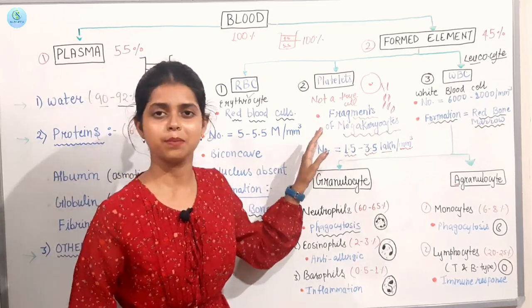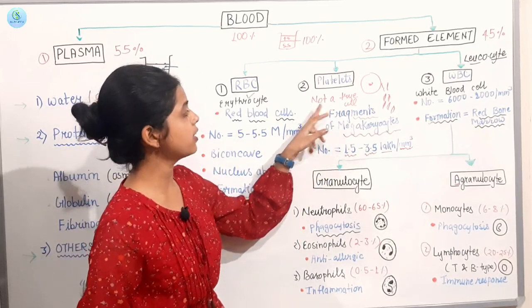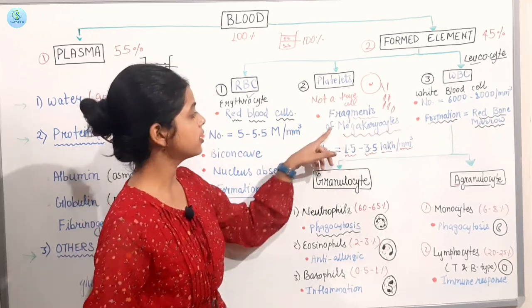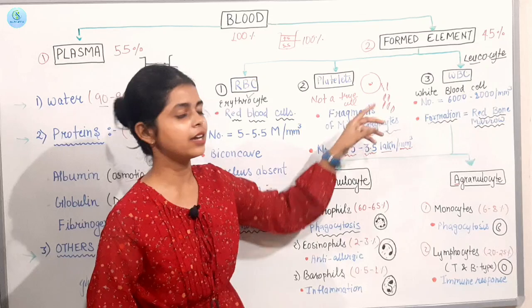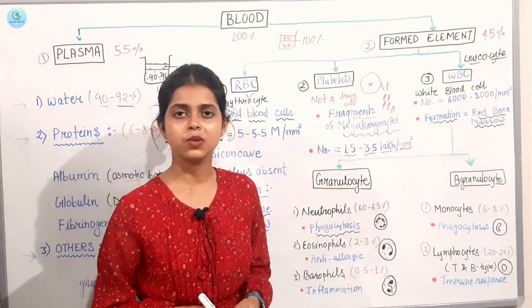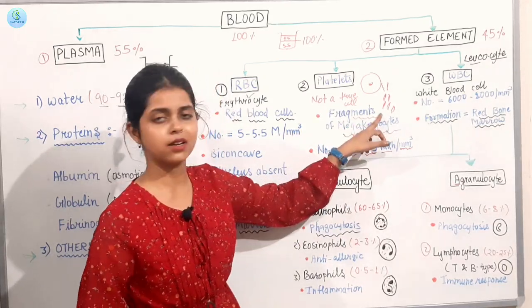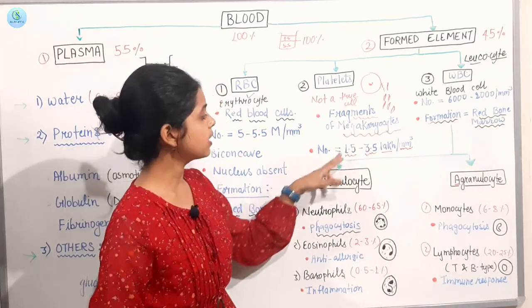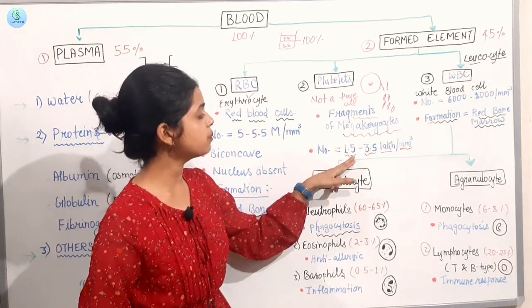Then we talk about platelets. The platelets are not true cells. Why do not have true cells? This is not the number of cells. We talk about numbers. The number is 1.5 million.